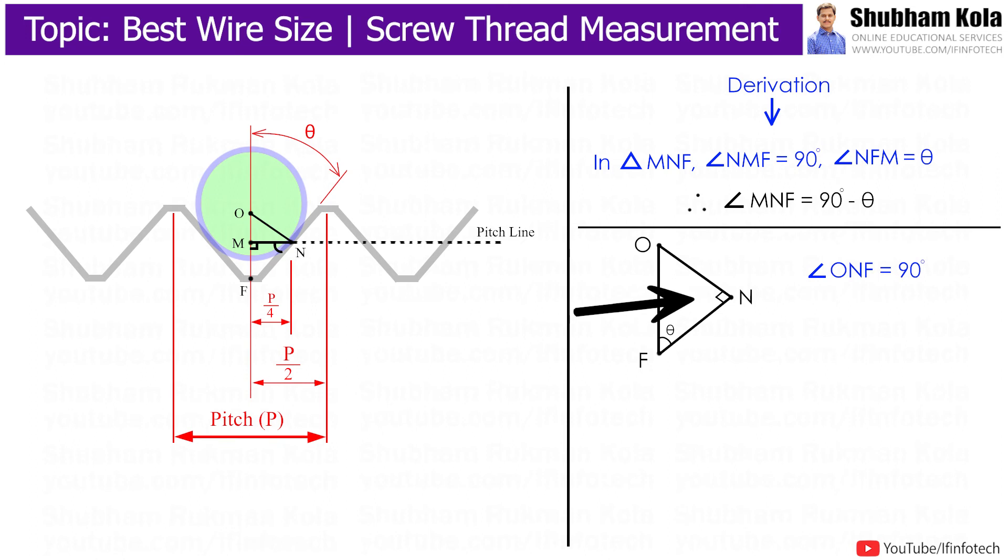Now this total angle ONF is 90 degrees, so the angle ONM would be 90 minus 90 minus theta, and here plus 90 minus 90 get cancelled, so the angle ONM equals theta.